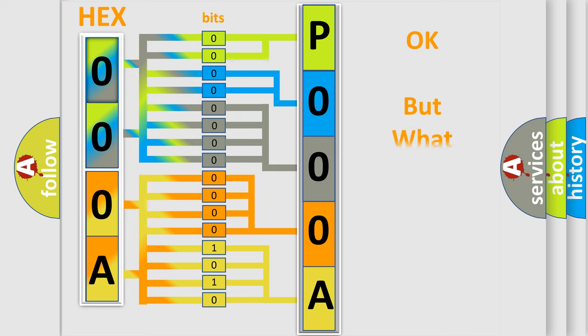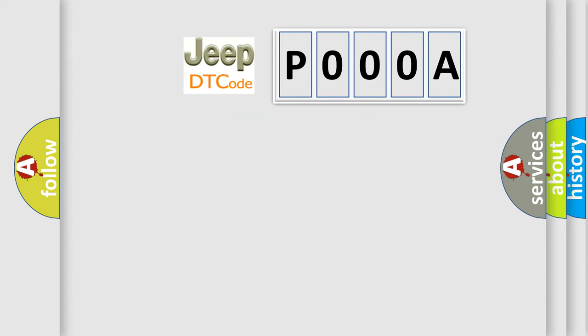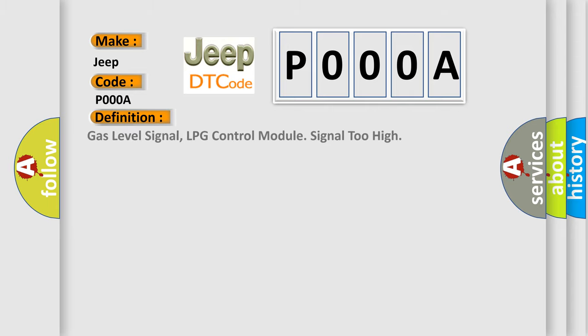We now know in what way the diagnostic tool translates the received information into a more comprehensible format. The number itself does not make sense to us if we cannot assign information about what it actually expresses. So, what does the Diagnostic Trouble Code P000A interpret specifically for Jeep car manufacturers? The basic definition is Gas level signal, LPG control module signal too high.